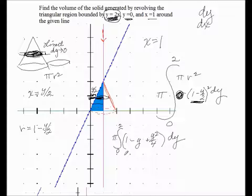And this would all be multiplied by dy. Now if we integrate that, we get pi times y minus y squared over 2 plus y cubed over 12, evaluated from 0 to 2.